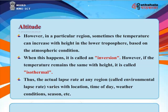In a particular region, sometimes the temperature can increase with height in the lower troposphere — when this happens, it is called an inversion. If the temperature remains the same with height, it is called isothermal. The actual lapse rate at any region, called the environmental lapse rate, varies with location, time of day, weather conditions, season, and so forth.